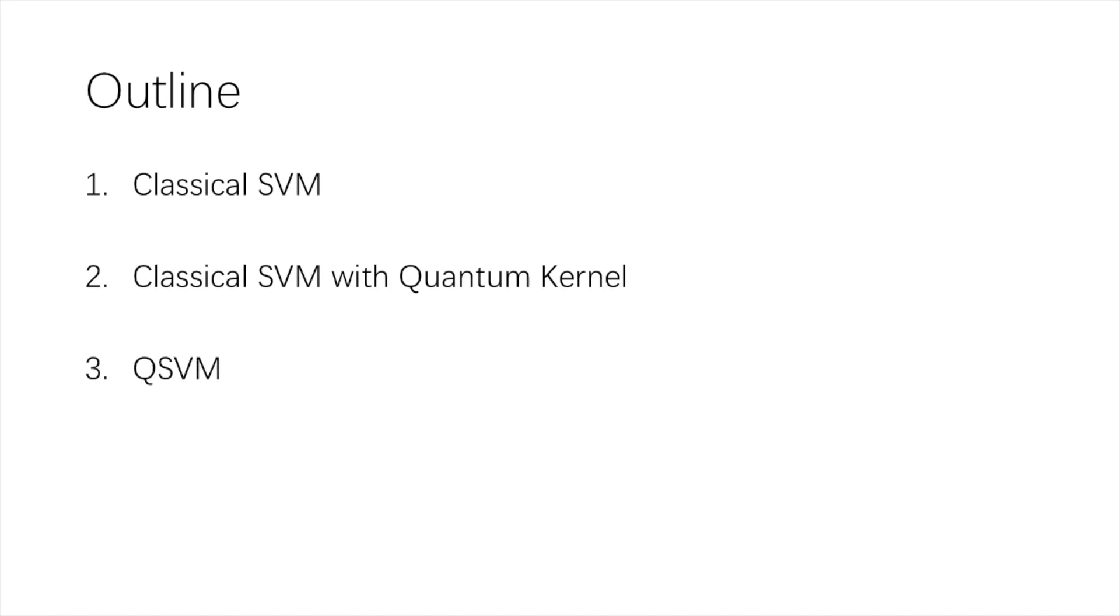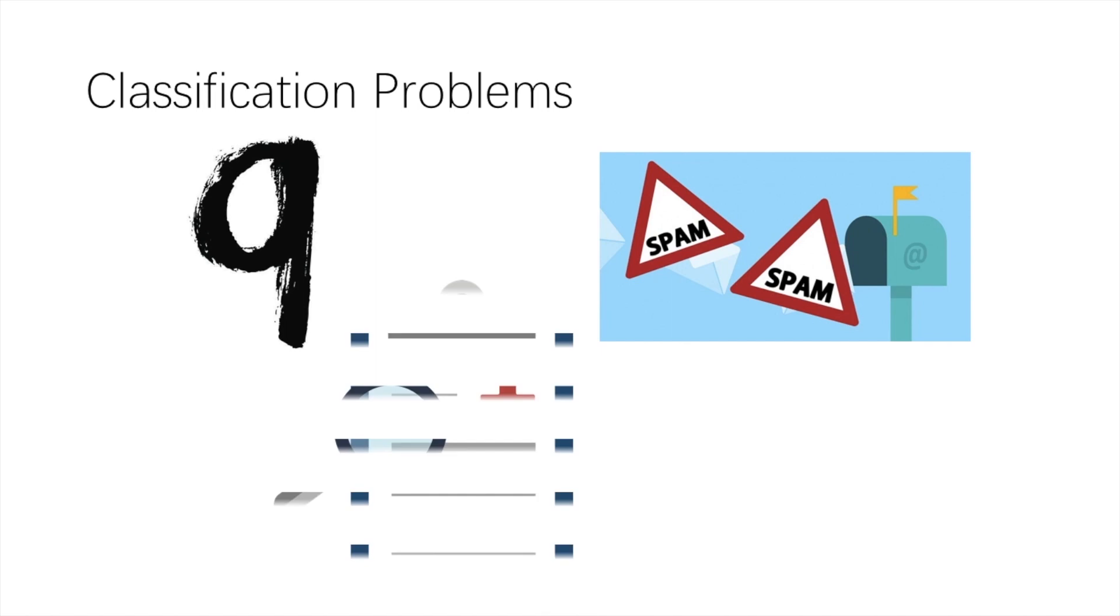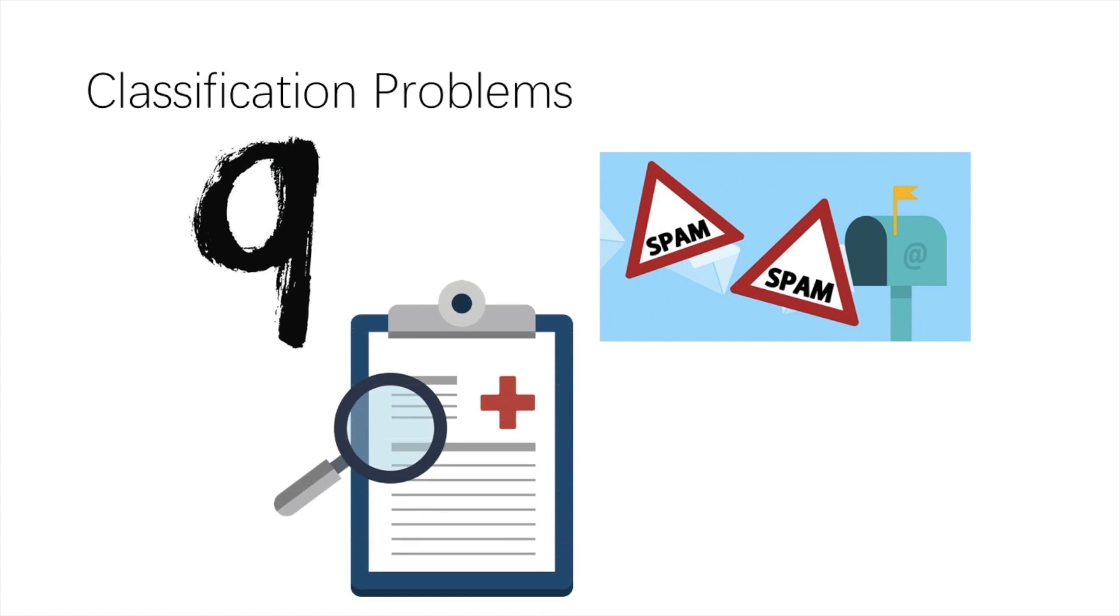Despite its fancy name, SVM is an algorithm to teach computers to solve classification problems, like what's the number in the picture, is a receiving email spam, or is a patient sick based on his medical record.